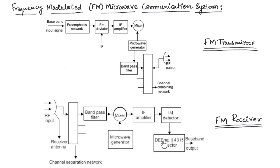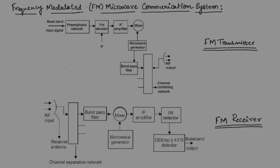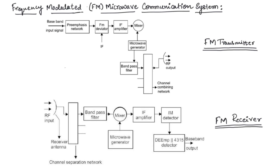The de-emphasis network performs attenuation of those frequencies by the amount by which they were boosted during the pre-emphasis at the transmitter stage. Finally, the baseband signal is taken as output at the receiver stage. This is about the Frequency Modulated Microwave Communication System.